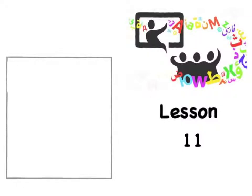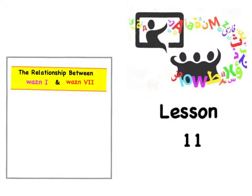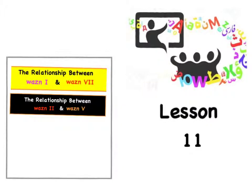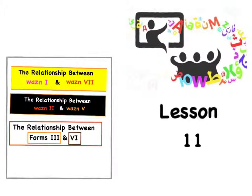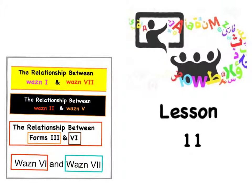Welcome back to lesson 11 part 3. In this section we're going to talk about the relationship between wazn 1 and wazn 2, the relationship between wazn 2 and wazn hamza, and the relationship between forms 3 and 6, also wazn 6 and 7 — so the relationship between all the different wazns and forms.